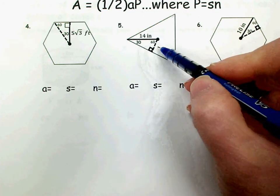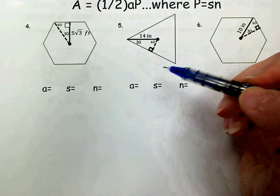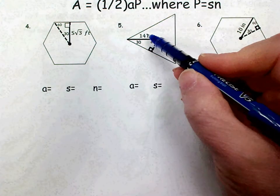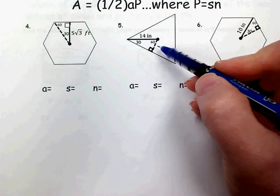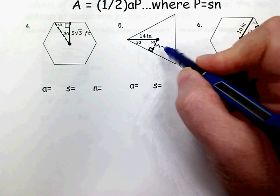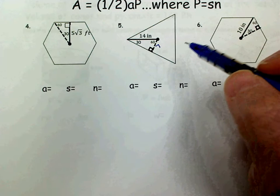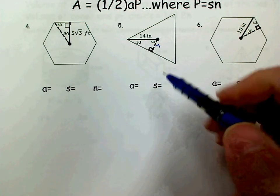I want the apothem, which is across from the 30. That's the short leg. To go from the hypotenuse to the short leg, we divide by 2. That's it. So remember that's where that 2 to 1 relationship exists, between short leg and hypotenuse.